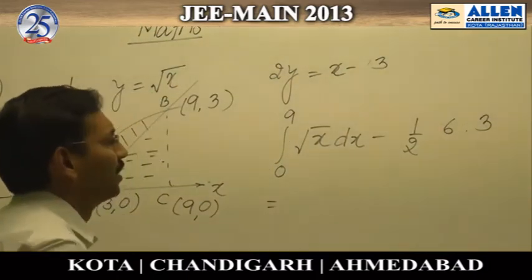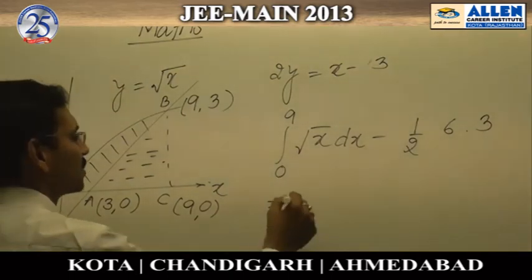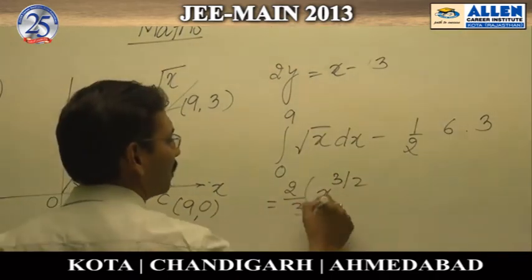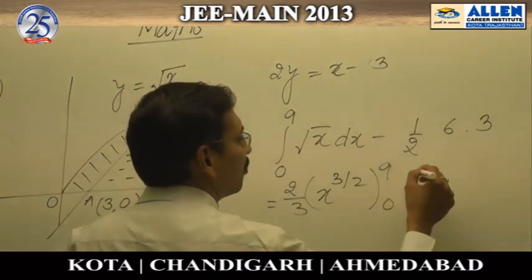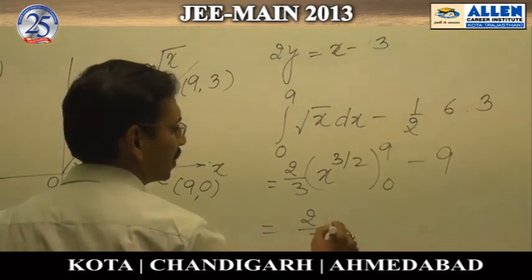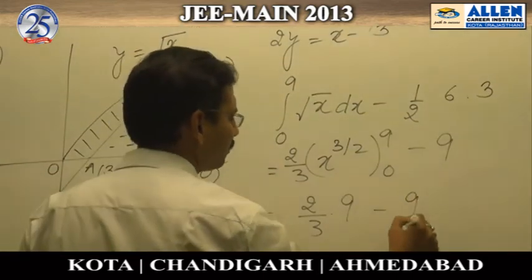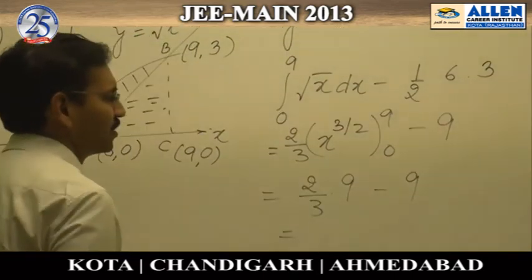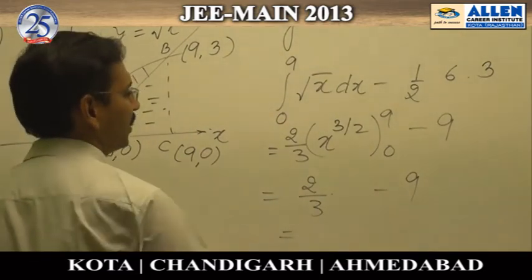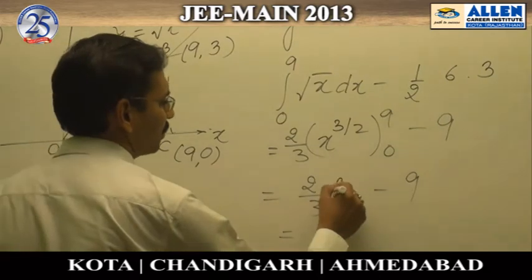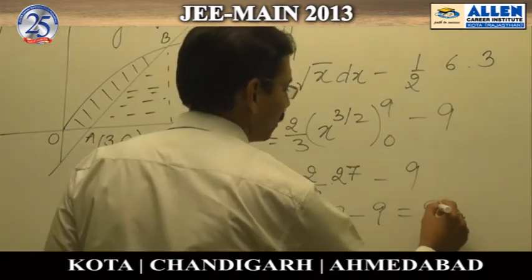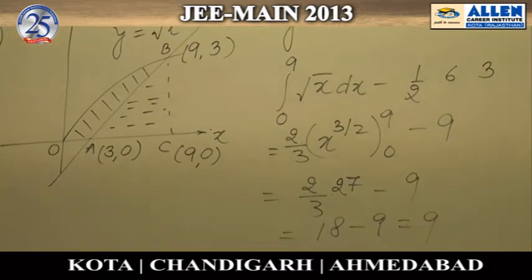Solving, we get x raised to the power 3/2 multiplied by 2/3, evaluated from 0 to 9, minus 9. This gives 2/3 multiplied by 27, minus 9, which equals 18 minus 9 equals 9. So the final answer is option 1.